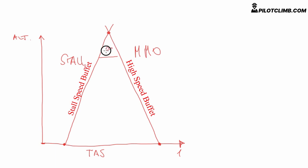An aircraft flying into this area has a big problem: if it accelerates a little bit it will fly above its critical Mach number, and if it slows down a little bit it will go into the stall. The high speed buffet and the low speed buffet get very close, so you don't have any room for acceleration or deceleration.